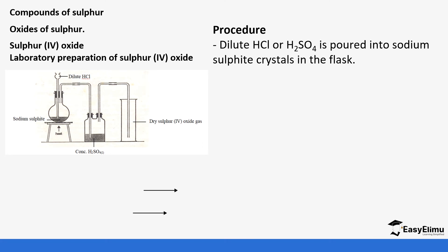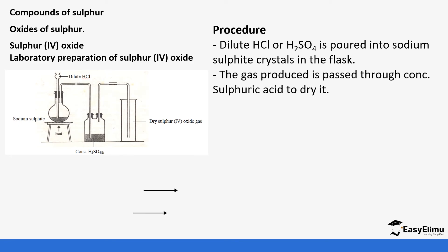The first method of preparing sulfur dioxide is the reaction of dilute hydrochloric acid or dilute sulfuric acid with sodium sulfite. In the setup, the dilute hydrochloric acid is in the delivery tube, sodium sulfite is in the round-bottomed flask, and the mixture is heated. The gas is then passed through concentrated sulfuric acid to dry it, and the gas is collected by downward delivery, which tells you that sulfur dioxide is heavier than air.